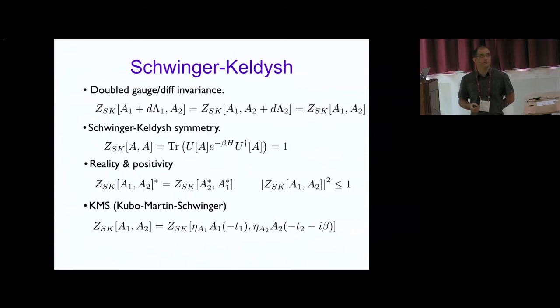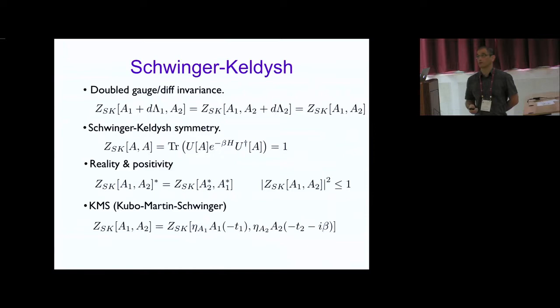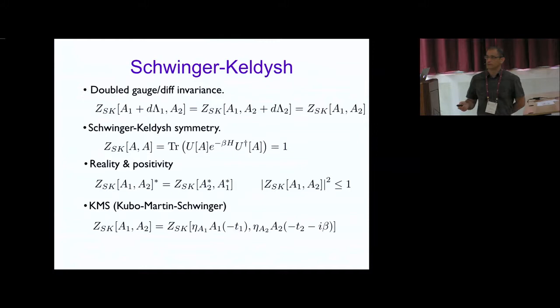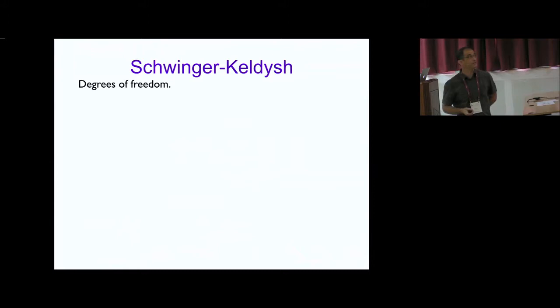The KMS symmetry involves β appearing because this operator generates translations in imaginary time. These are the symmetries we need. For the degrees of freedom, we have to guess — but I'll motivate the guess. Imagine this is our fluid. Most of you are familiar with Euler's description of fluids, where at each point in space we define a velocity field and a temperature and look for their dynamics.